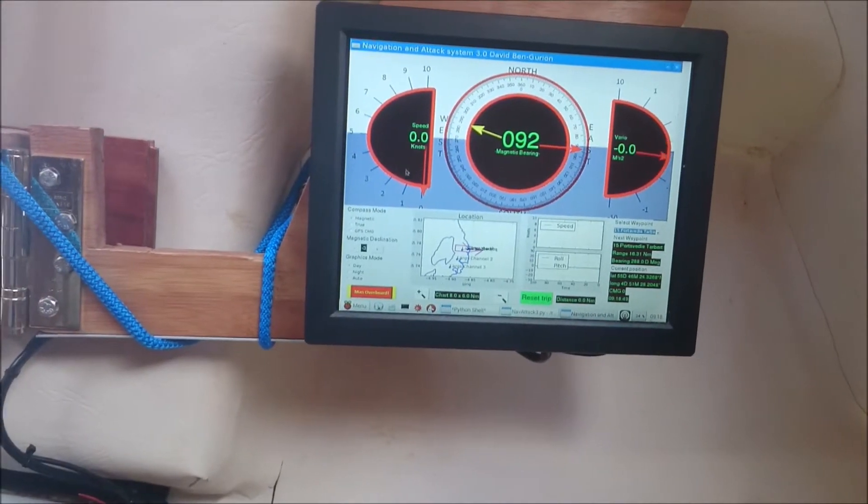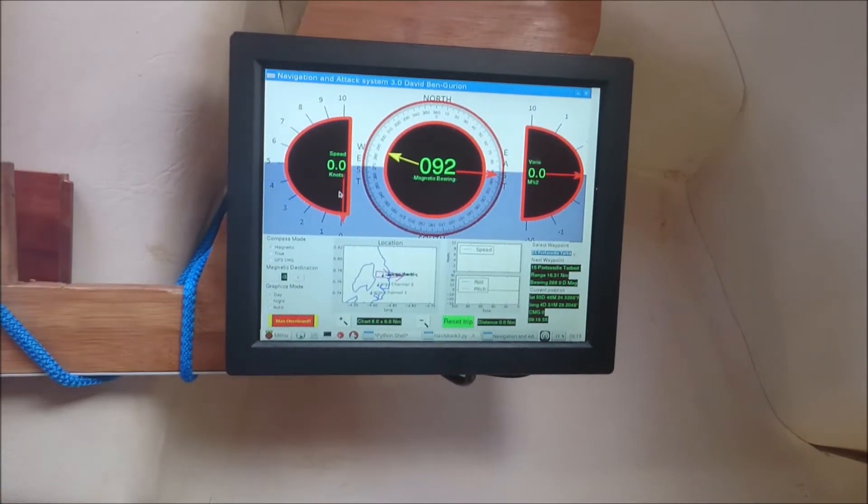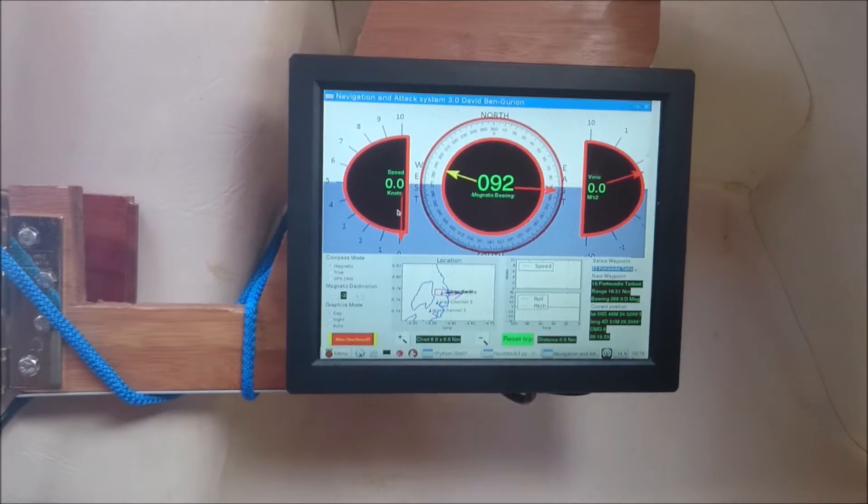The yellow arrow there is the bearing to the next waypoint. This here on the left is the speed. It goes from 0 to 10 knots. Obviously this is a 27 foot sailing boat so I think the most I've had it was just a shy of 8. It's a reasonably fast boat.